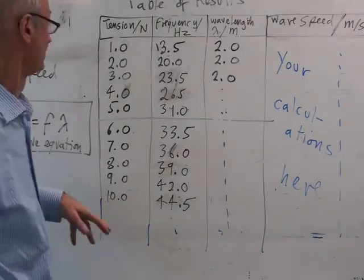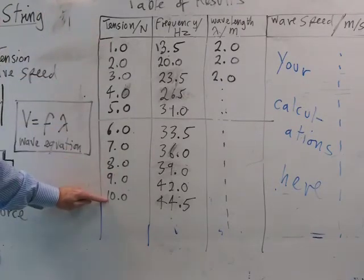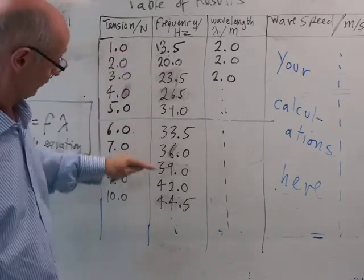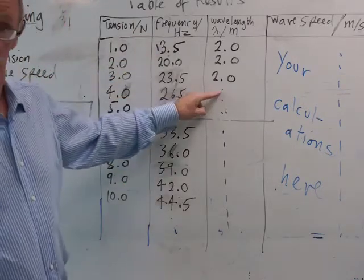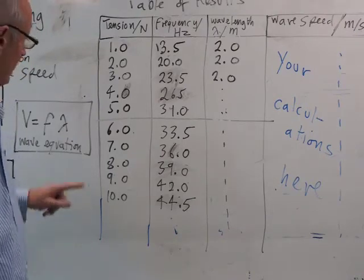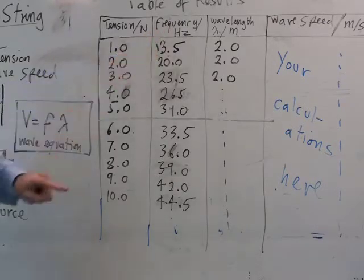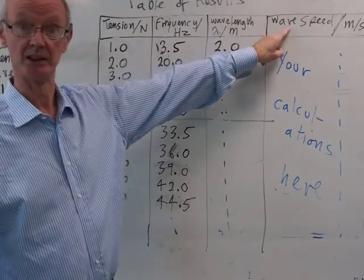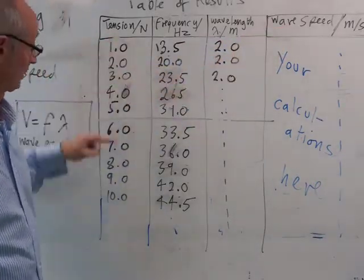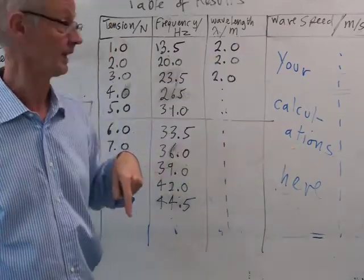I've finished the experiment and here are all the different tensions from 1 newton up to 10 newtons, and here are the different frequencies that I measured. The wavelength was always the same — we didn't change the length of the string. You're going to use the wave equation to take the frequency f in hertz, multiply by the wavelength to get the wave speed. Then you'll have a relationship between the tension in the string and the wave speed, and you're going to do the calculations.